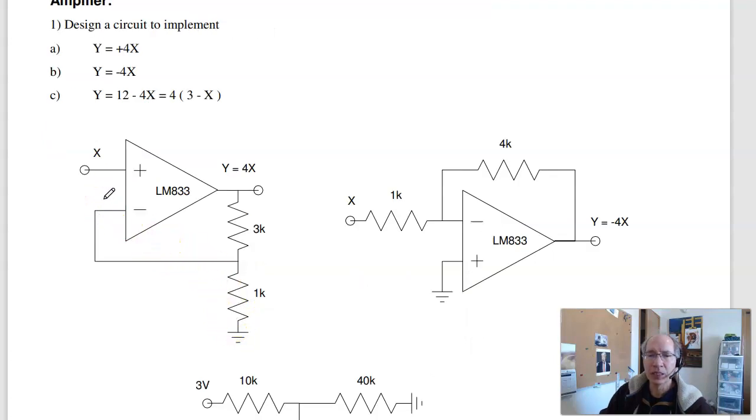One way to see that is with the negative feedback, v plus equals v minus. If this is x, this is a voltage divider. x is 1 fourth of y, which means that y is 4 times x.